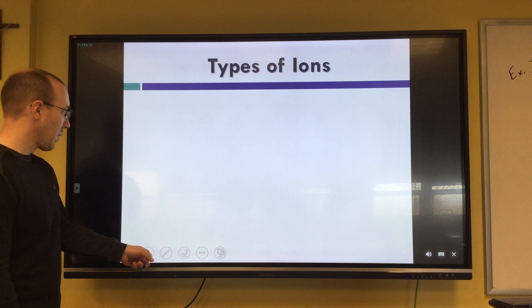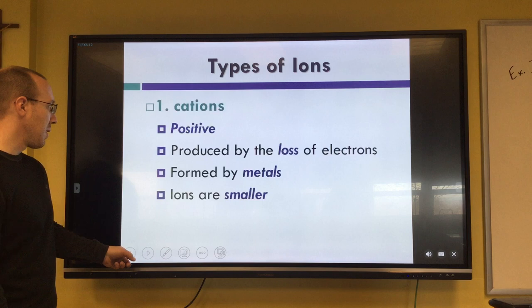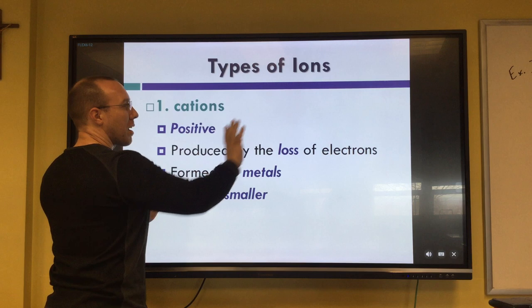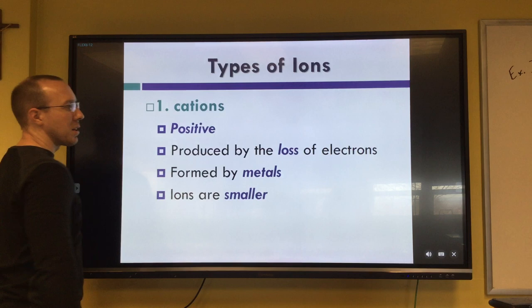We have two types: cations are positive and anions are negative. Cations are formed by the metals. On the periodic table, if you look at what you drew on your color periodic table, the metals are on the left hand side before that jagged line. The stuff in the middle and left is going to be a positive ion, and the stuff on the right, the non-metals, are going to be anions.